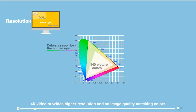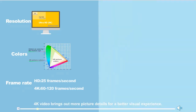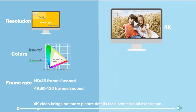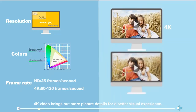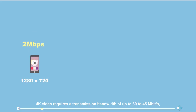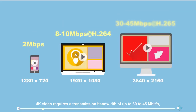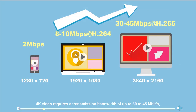With a rate of 120 frames per second, 4K video brings out more picture details for a better visual experience. The improved resolution, image quality, and frame rate mean that 4K video requires a transmission bandwidth of up to 30 to 45 megabits per second — many times the bandwidth that high-definition video requires.